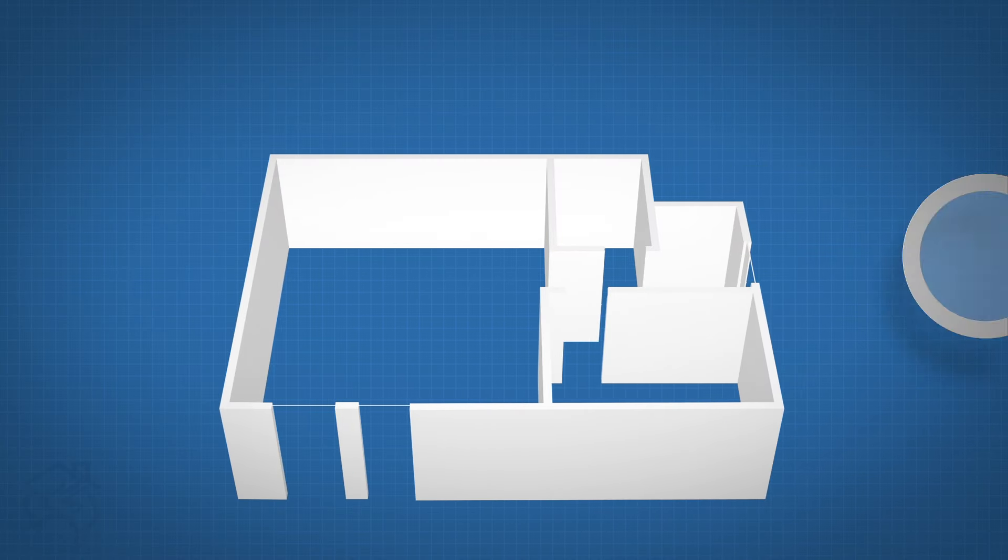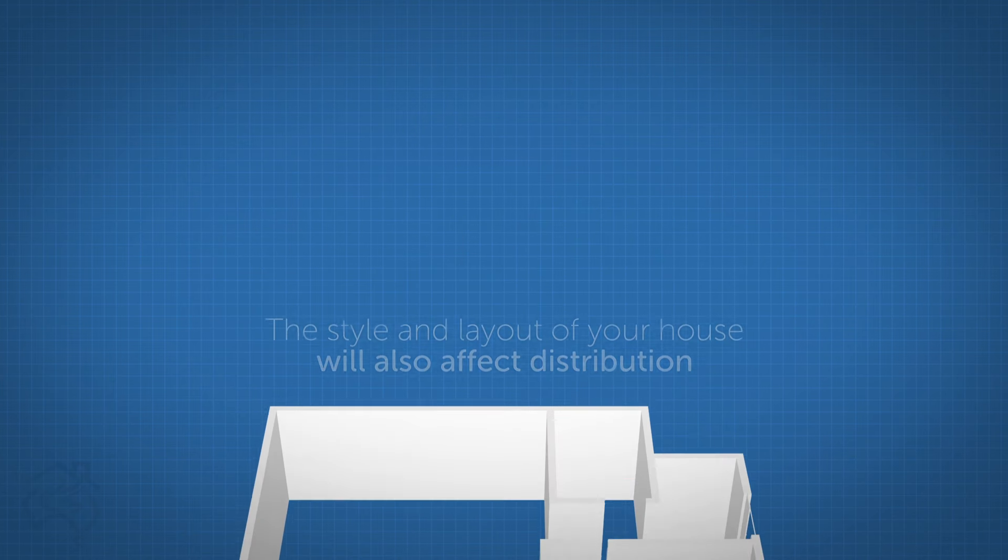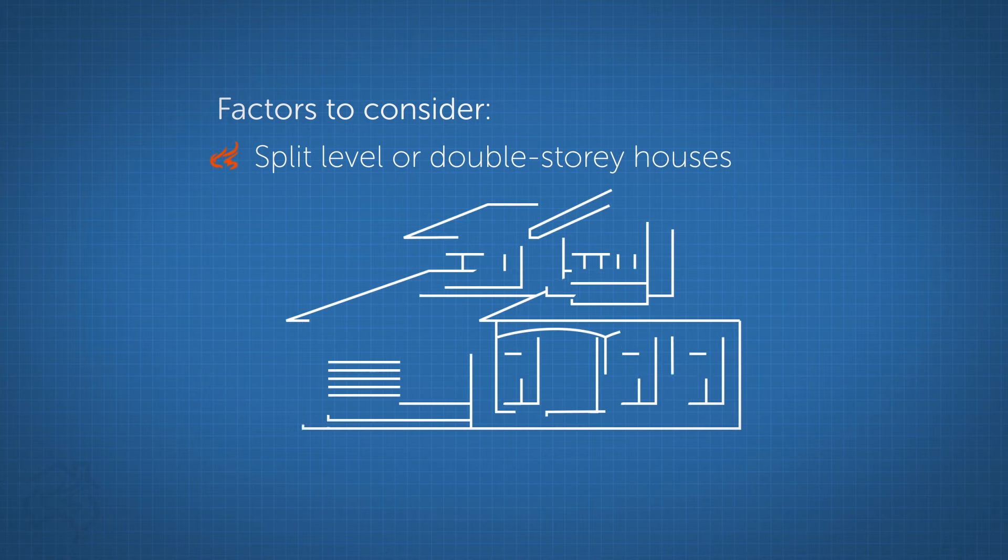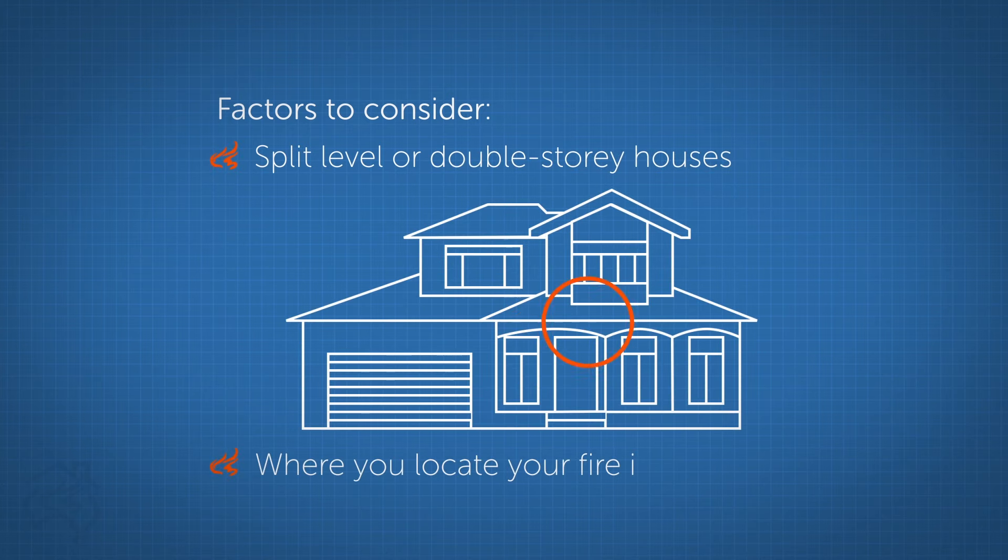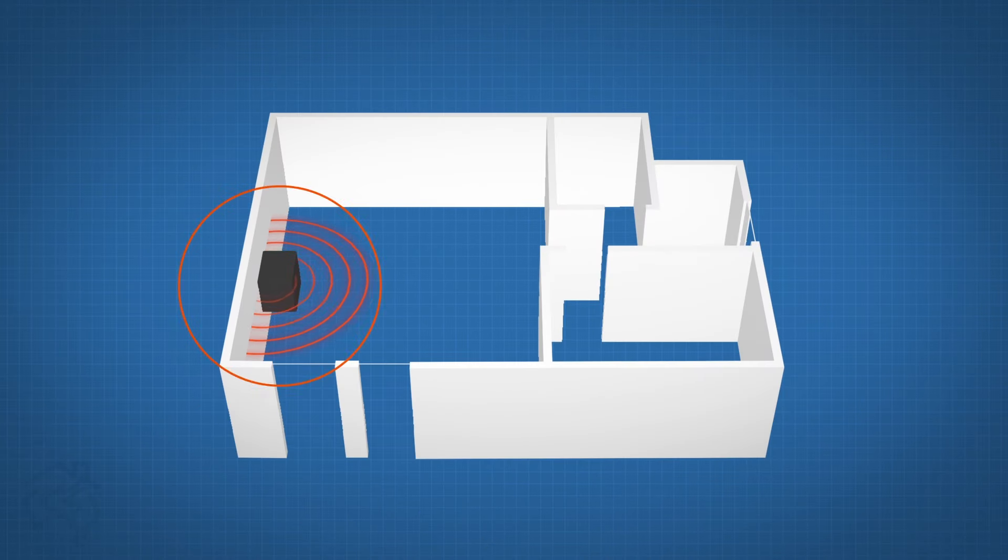The style and layout of your house will also affect the unit's ability to distribute heat. Factors to consider include split level and double storey houses and where you locate your fire in the house for better heat distribution. The more central the location of your fire, the better.